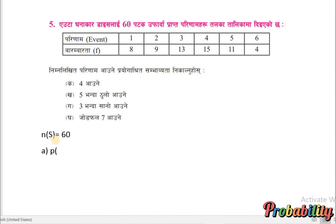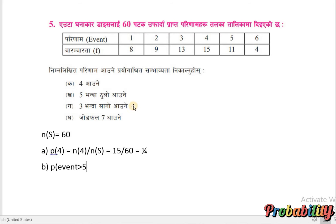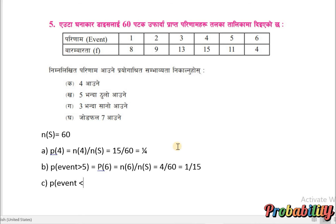For a product of two dice, the sample space is 60. The probability of 4 is equal to number of fours upon total sample space, which is 15 by 60, equal to 1 by 4. The probability of 2 is 6 by 60. So 3 by 50 means probability of 1 or probability of 2. The result is 8 by 60 plus 9 by 60, equal to 17 by 60.